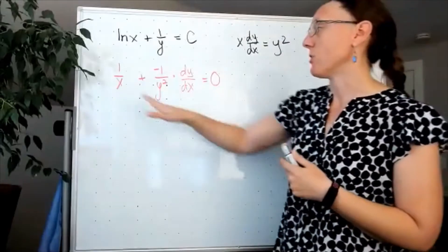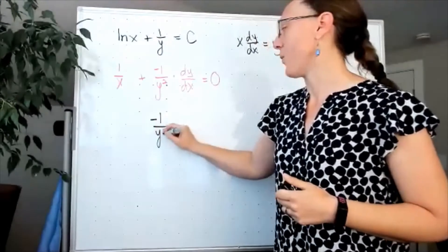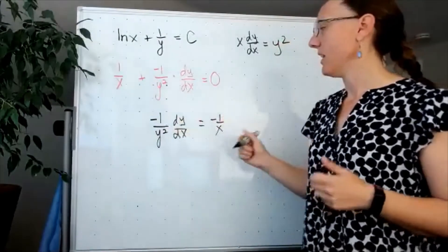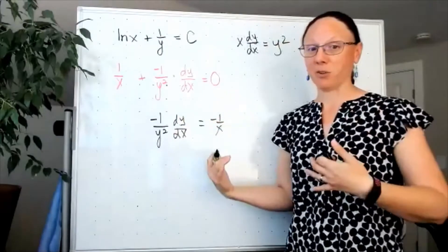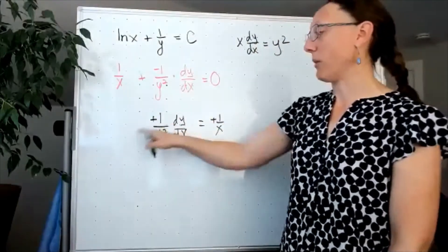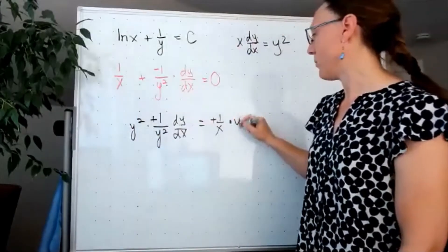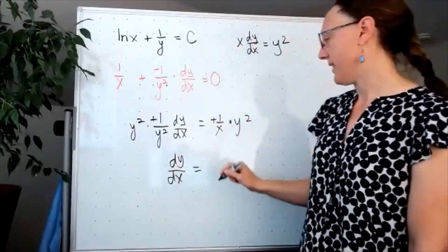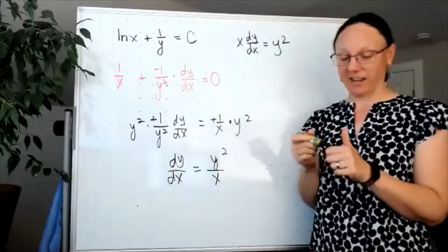The first thing I'm going to do is subtract 1 over x from both sides. So I'll have negative 1 over y squared dy/dx is equal to negative 1 over x. Because I've got that negative on both sides, I could quickly multiply both sides by negative 1 and get rid of those minus signs. And to get dy/dx by itself, I would end up multiplying both sides by y squared. So now I'm at dy/dx is equal to y squared over x.